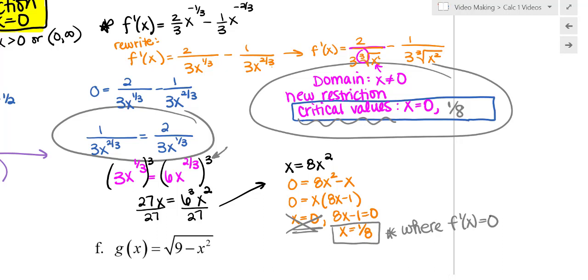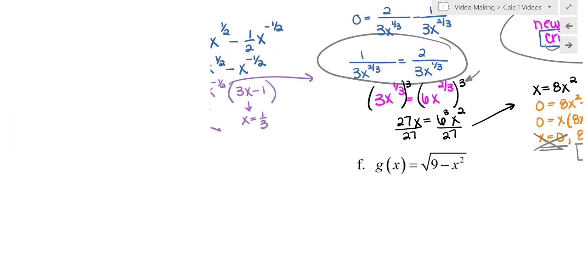But the other critical value came from the idea that it was a new restriction. And again, that's just one technique of solving. Hopefully you have a technique of your choice from your college algebra course. Let's look at another one.